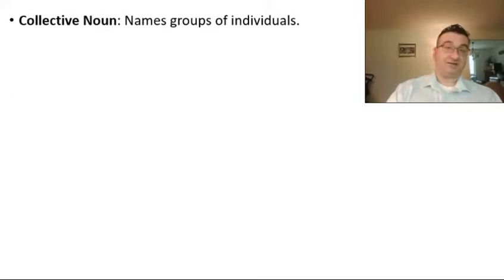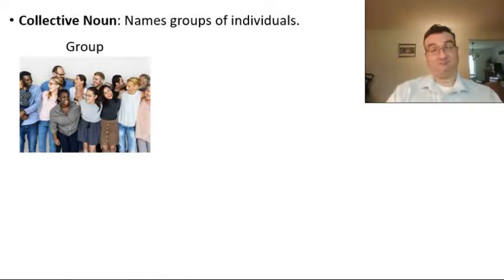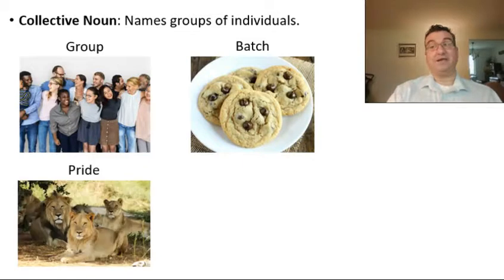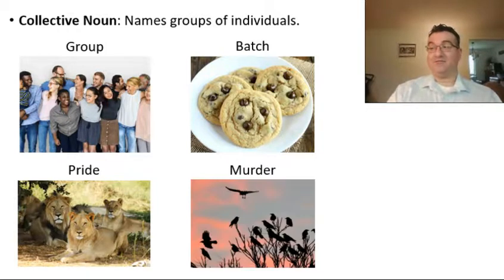Finally, we have collective nouns. These are nouns that name a group of individuals. The word group itself names a gathering of people. Or you can have a batch of cookies. Some collective nouns are very specific — you can have a pride of lions, but you can't have a pride of cookies or a pride of books; it only really works for lions. One that's kind of creepy is a group of crows — it's called a murder of crows. Those are collective nouns.